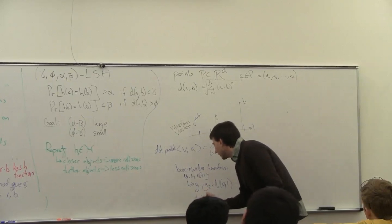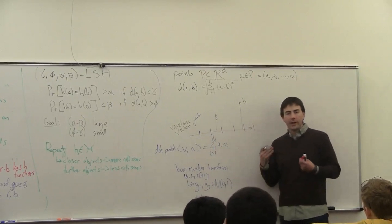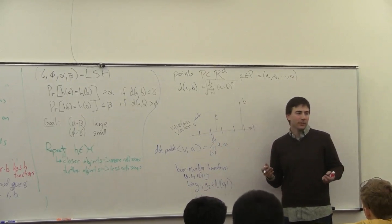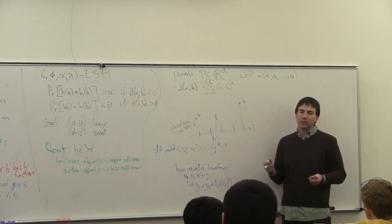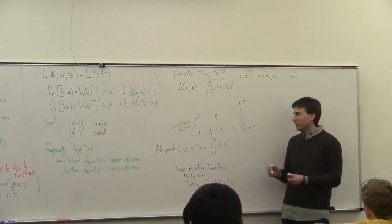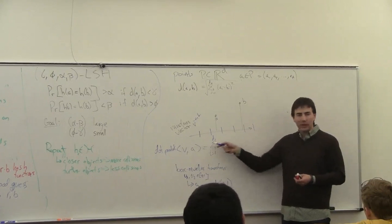You do this d times, and then you get a vector drawn from a random d-dimensional Gaussian. This d-dimensional Gaussian, it's not a unit vector, but we just have to normalize it. Because the Gaussian is symmetric, it's random which direction it's pointing to. So we just have to normalize it, and then we can use it here.